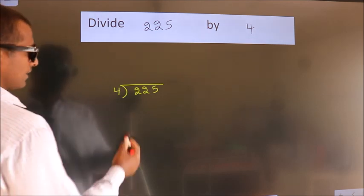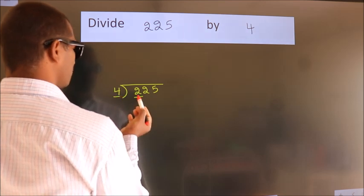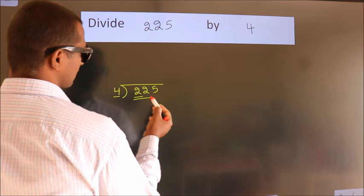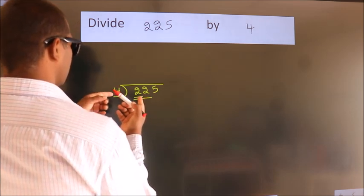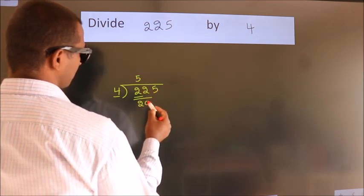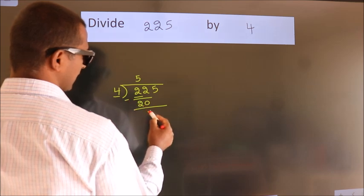Next, here we have 2 and here 4. 2 is smaller than 4, so we should take 2 numbers: 22. A number close to 22 in the 4 table is 4 times 5 equals 20. Now we should subtract, and we get 2.